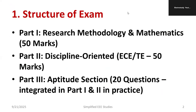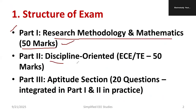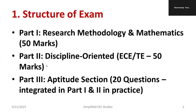Let me give you the entire structure of the examination. The overall structure comprises three parts. The first part is research methodology and mathematics, which carries 50 marks. The second part is discipline-oriented — I am talking about ECE and Telecommunication engineering — which carries another 50 marks. An aptitude section is also included as an integrated part along with part 1 and part 2.